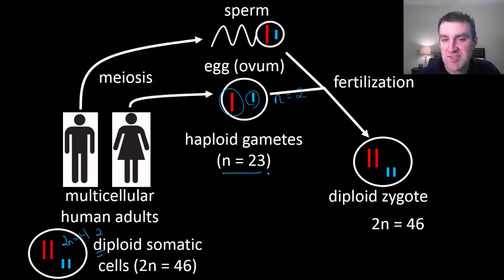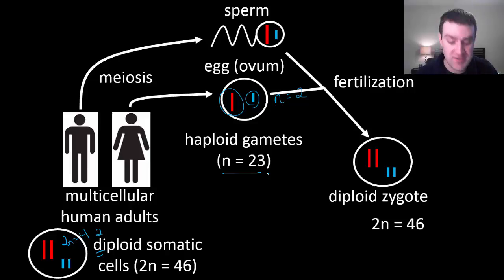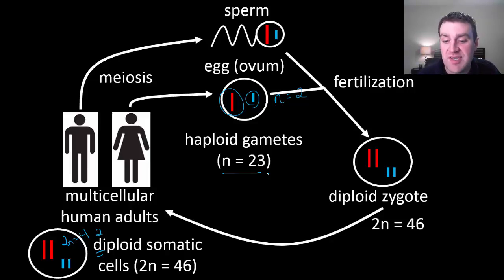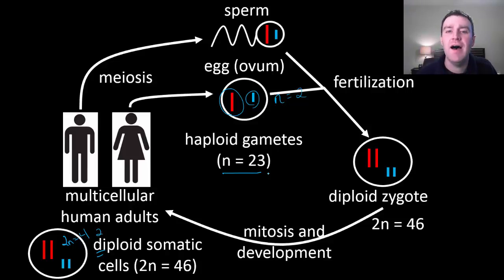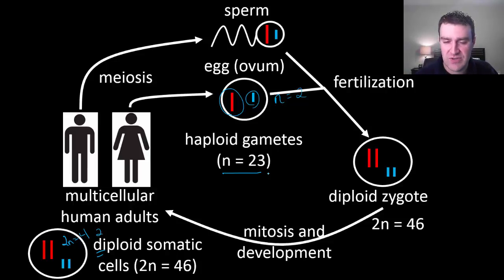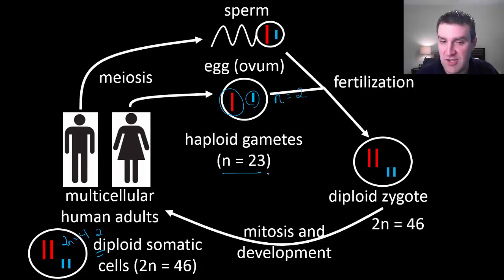That zygote — that first cell we all started from — will make copy cells, and those cells will go on to make more copy cells. The process of making copy cells is called mitosis. It's not just mitosis that eventually creates a new human with the human form; those cells also have to specialize, take the right shape, and develop so that we have all the right cells in all the right places. We're not going to go into that in detail here, but use this to summarize the purpose of meiosis and mitosis in different parts of the human life cycle.